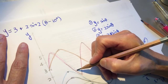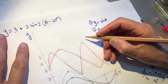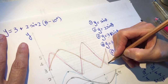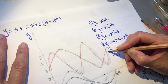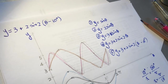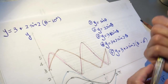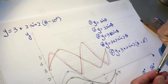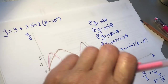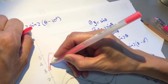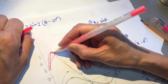We shift it 10 degrees to the right. The shape and everything remains the same — it just delays 10 degrees. Now drawing the final graph in orange.